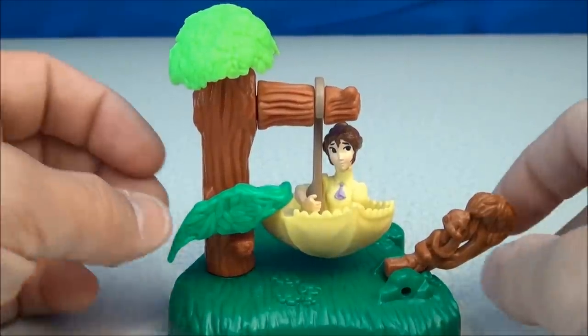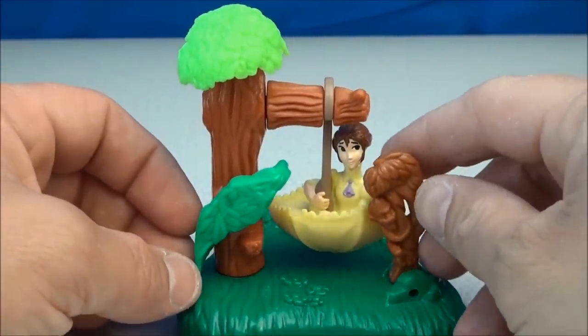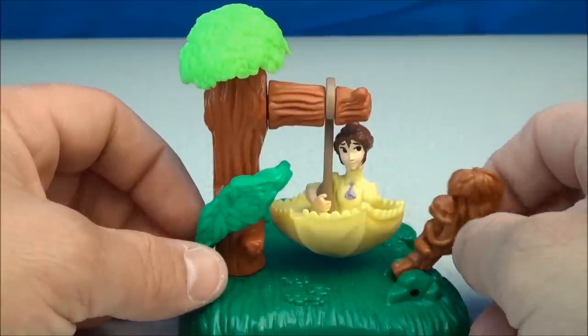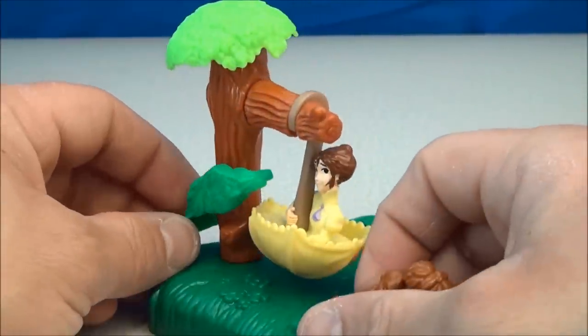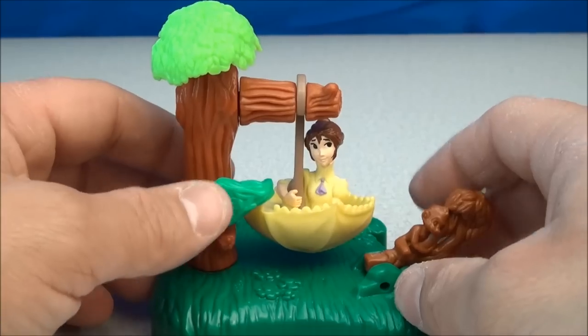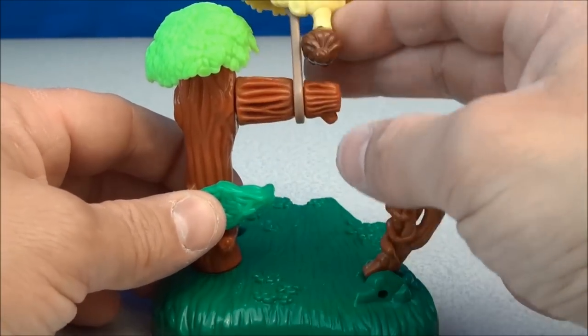Next up, we have the Jane Flipping figure. You can see there's a little monkey in a tree right there. She's sitting in some sort of an umbrella or a parasol, if you will.